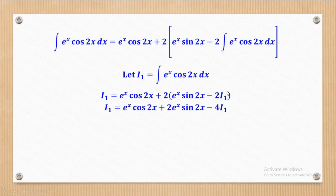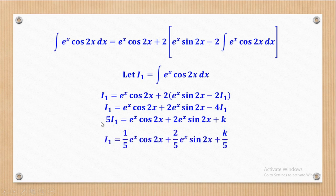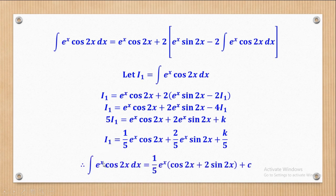Next is to expand and collect like terms. When I expand, 2 times the bracketed expression gives the result shown, and when I collect like terms taking i1 to one side, it will be 5·i1. I'll remember to add the constant of integration since we now have a single integral. Next, make i1 the subject by dividing through by 5. Since i1 was the given integral, the integral of e^x cos(2x) dx equals (1/5)e^x(cos(2x) + 2 sin(2x)) + c, where c = k/5.